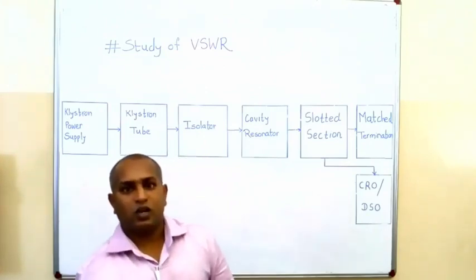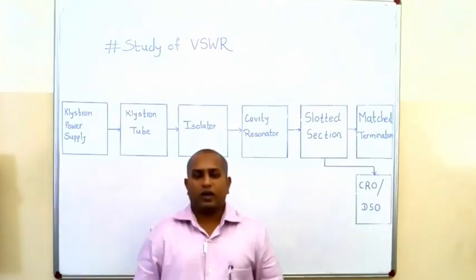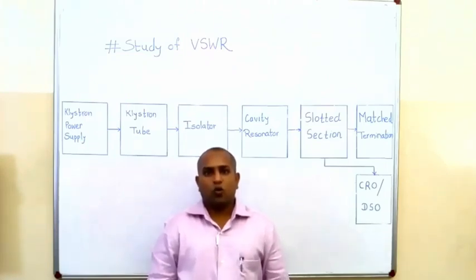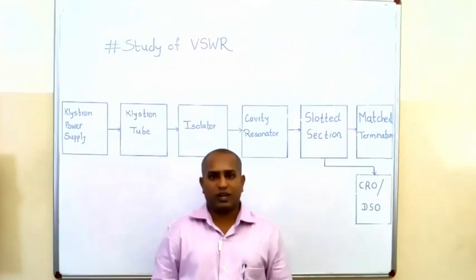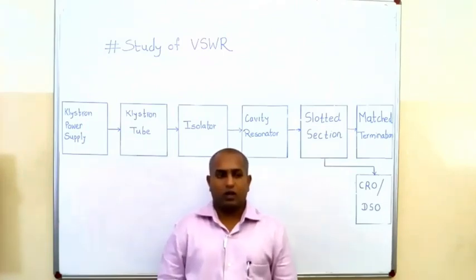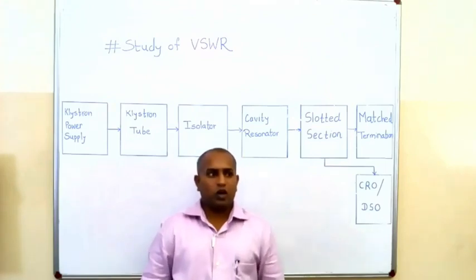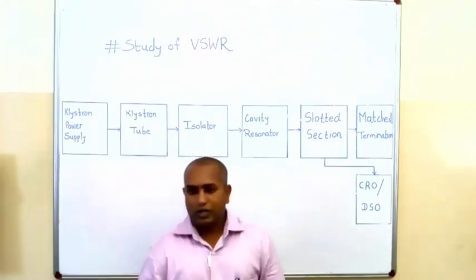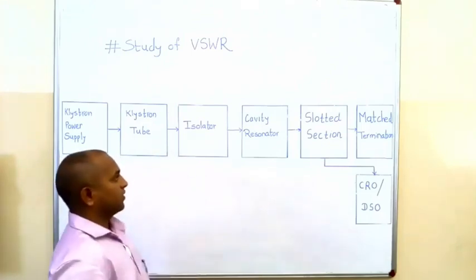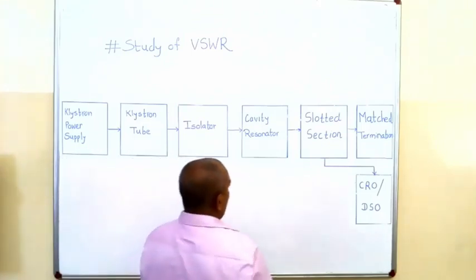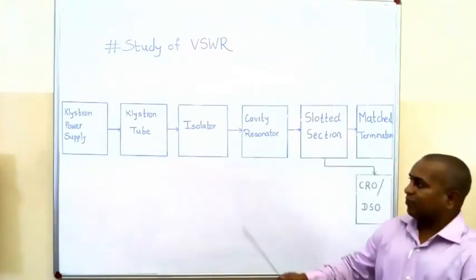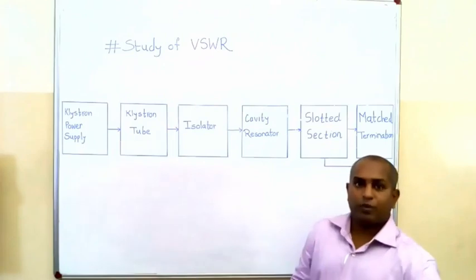Our title is to measure and verify voltage standing wave ratio with respect to open, short, and matched termination by using the slotted line section. For VSWR measurement, we will use this block diagram. In this block diagram, we already use many blocks from a previous experiment.